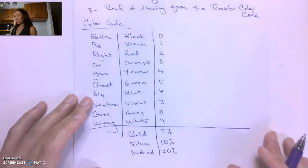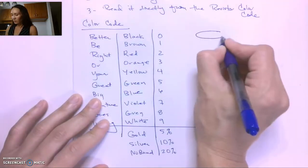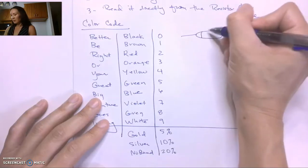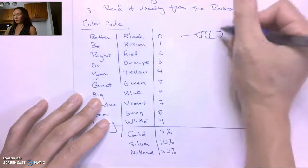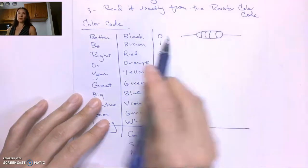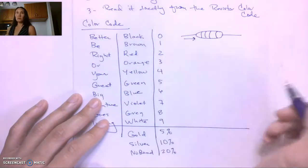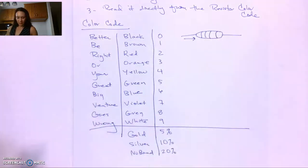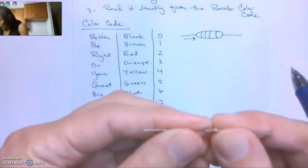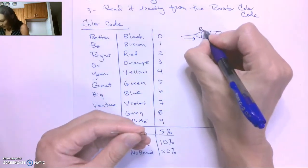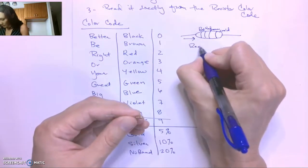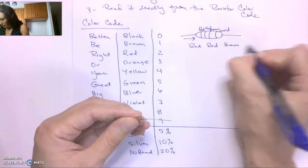Here's how we decode the resistance from the color bands. You can find the orientation of the resistor by finding the metallic band — the first three bands will be one of the standard colors, and the last band is the metallic band. Looking at the first resistor, it has red, red, brown, and then a gold band.